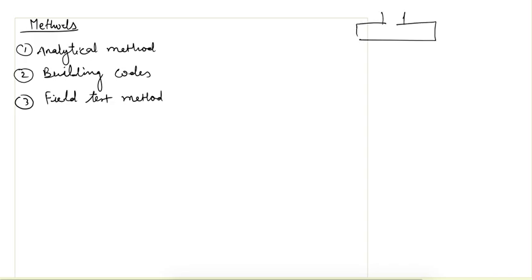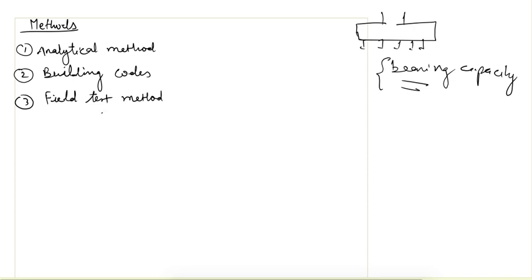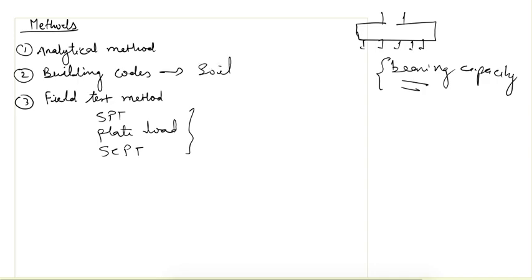The intensity of loading from a foundation upon a soil should be less than the bearing capacity of that soil. So the first thing we need to know in design is the bearing capacity. There are several methods available to find this: analytical method, building codes, or field test methods such as standard penetration test, plate load test, or static cone penetration test. Building codes are not very reliable because they are based upon soil description and not upon actual field conditions.